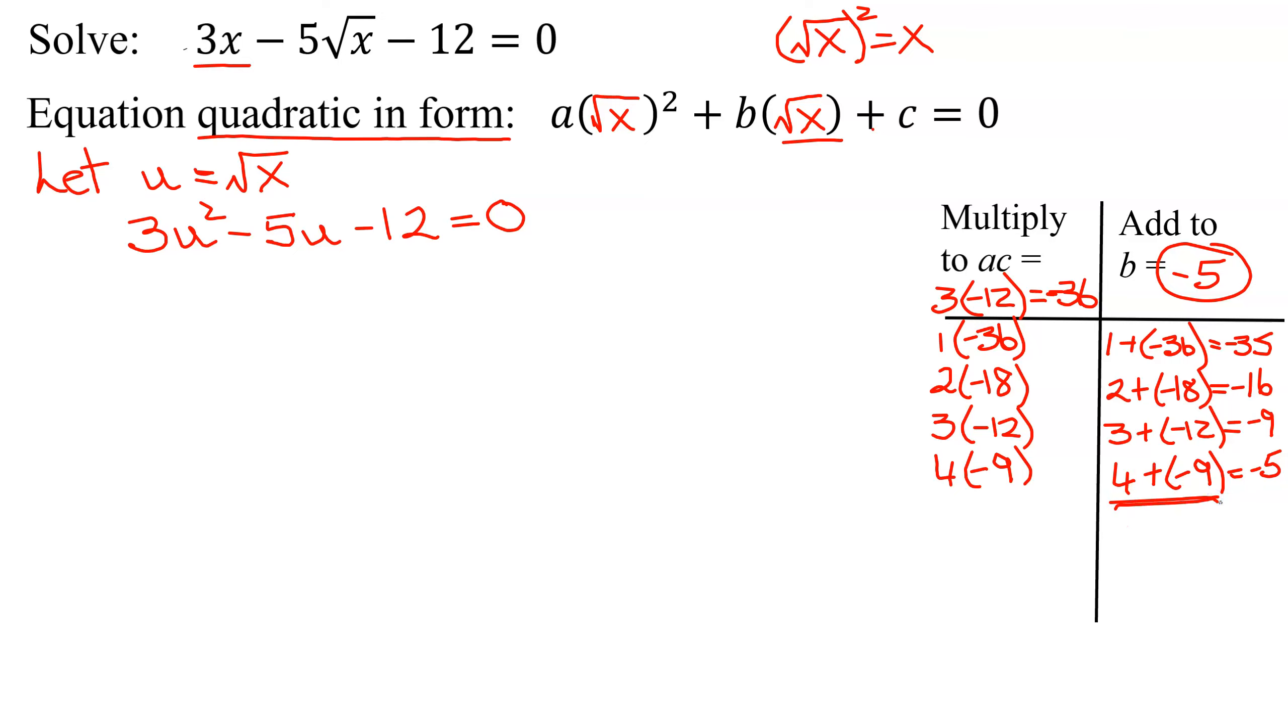These are not my factors. That's what I'm going to break down my middle term into. Instead of negative 5u, I'm going to write plus 4u minus 9u minus 12 equals 0. So I broke my negative 5u down into 4u minus 9u. Now we have 4 terms. How do you factor 4 terms? By grouping.